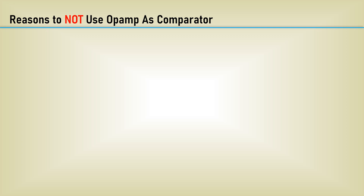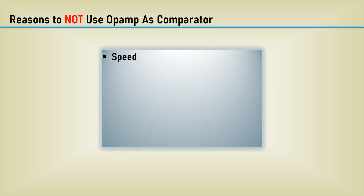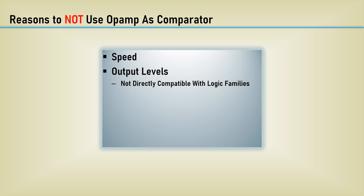Perhaps the most compelling reason is speed. We will compare the internal circuitry of the op amp versus the comparator, and then look at the results of a test circuit to evaluate the speed. The intended output of a comparator is digital, and the op amp's output is not often directly compatible with logic family voltage levels — additional circuitry is often required. The input levels of an op amp are sometimes not usable, as there are limits on the common mode input range.